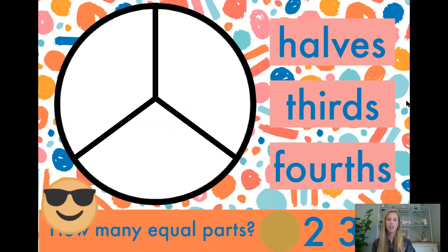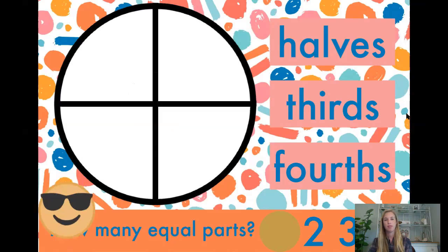Here's the next one — do you think this circle is cut into halves, thirds, or fourths, and why? And the very last one: is this circle cut into halves, thirds, or fourths, and why? I think this circle is cut into fourths — because it's cut into one, two, three, four equal pieces. Very good job!